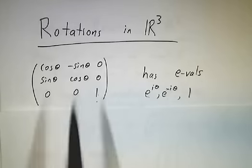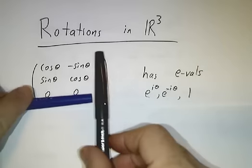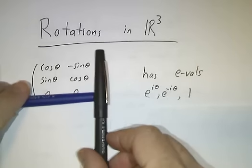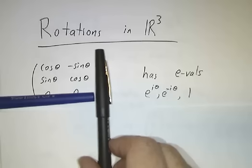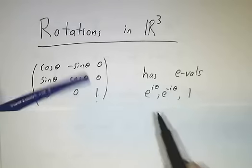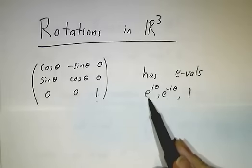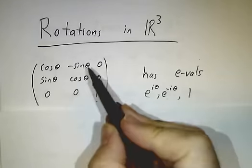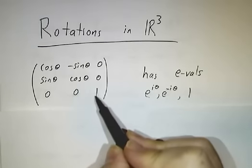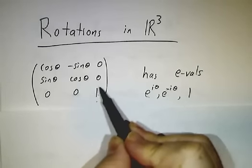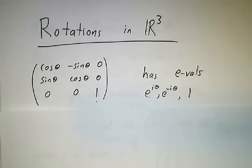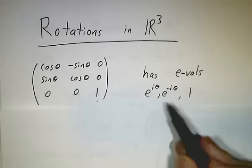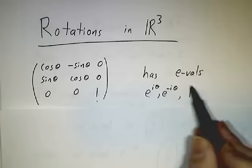We've seen that the eigenvalues of this 2x2 matrix are cosθ + i sinθ and cosθ − i sinθ — in other words, e^(iθ) and e^(−iθ). And the third eigenvalue is 1, which comes from the lower right-hand corner. So those are our eigenvalues.